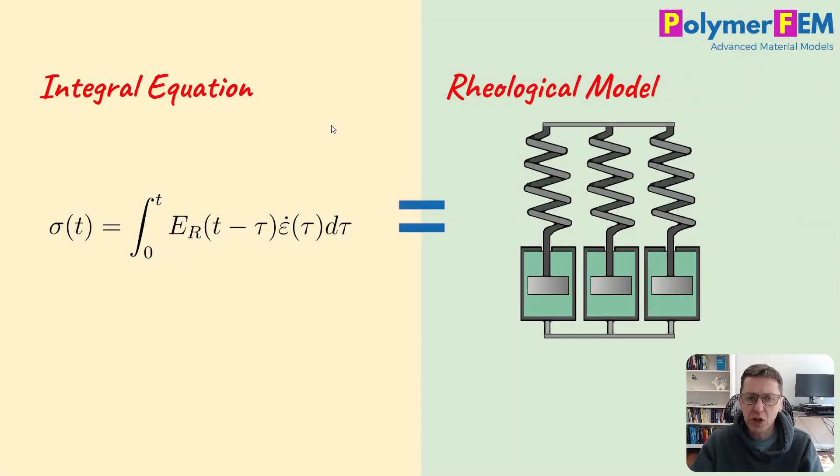And we started this series with the Boltzmann superposition principle. I talked about how we can derive this integral equation that describes how you can calculate the stress. And today I'm going to show you that this is actually equivalent to a spring and dashpot model. And it's shown in the figure here to the right, this rheological representation.